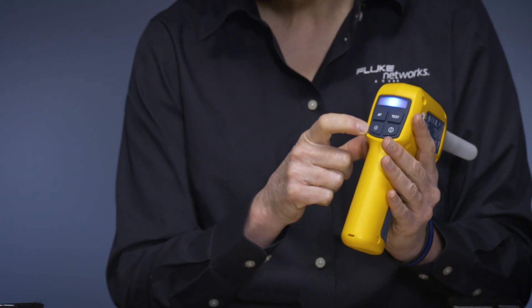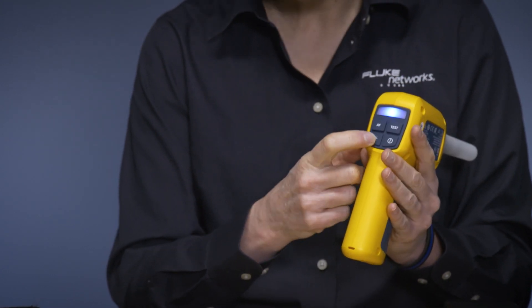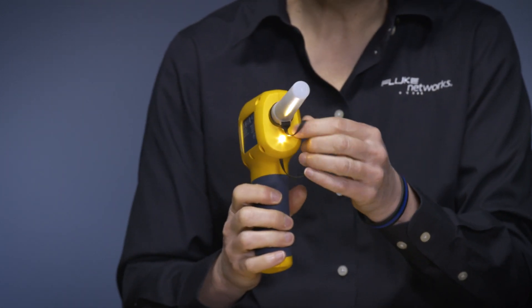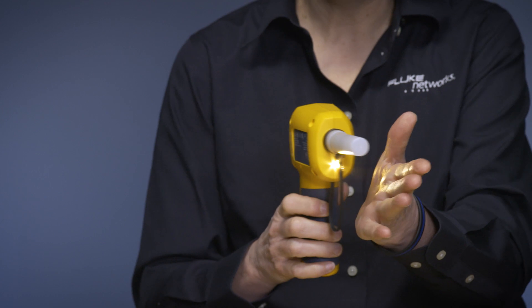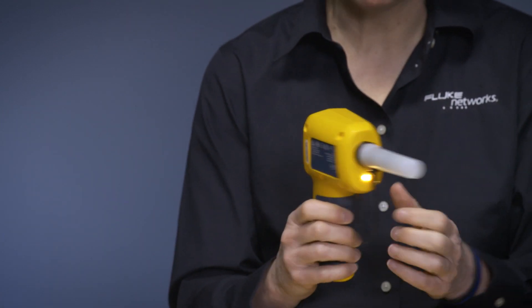I also have another button here and this is the port bright button. This is really nice if I'm in a dark enclosure. Because when I push that button a little LED on the front goes on and now I can see things in a dark location. So that is really nice.